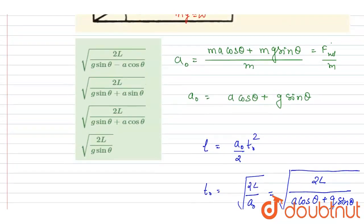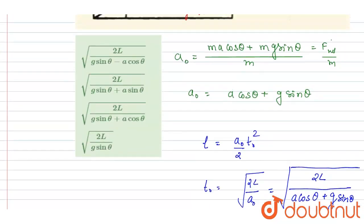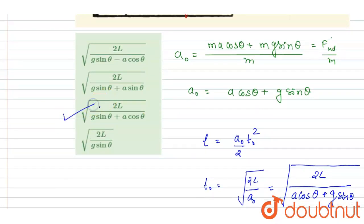...a cos theta plus g sine theta. Now you can check for the option: l upon g sine theta plus a cos theta. So C here is the correct option. Thank you.